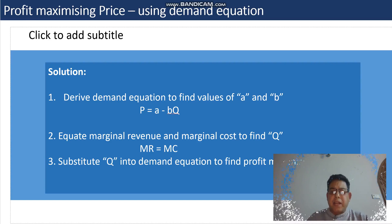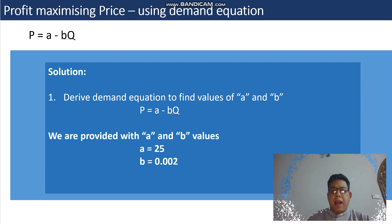Once we have this, we move on to the second step and then from the second step we move on to the third step. Now as in this question we already have the demand equation where the a value was 25 and the b value was 0.002, so we can simply move on to the second step.